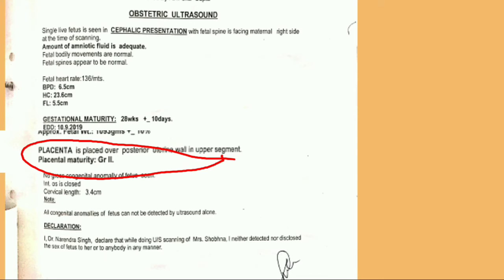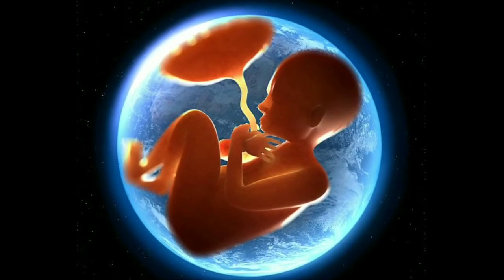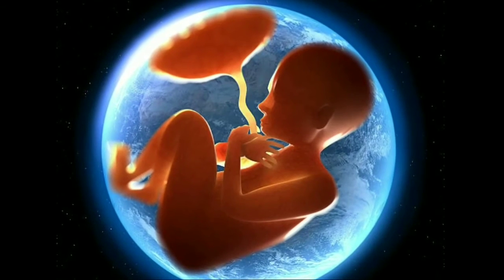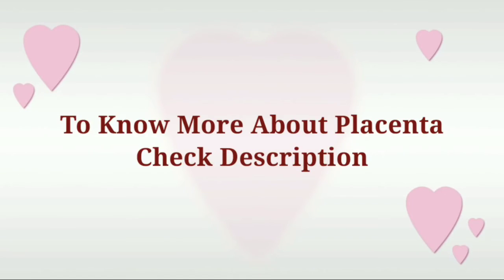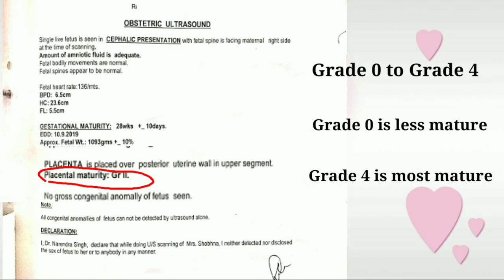The next is a very important section — every woman wants to know the position of the placenta. In my case it is written as posterior and placed on the upper side of the uterus. I have not explained what the placenta is and how it works in this video, but if you want to know, click the I button to watch my full video. Next is placental maturity, which is Grade 2. In ultrasound there are four levels of maturity: Grade 1 is very less developed and Grade 4 is fully developed. Here at 28 weeks it is Grade 2 maturity.